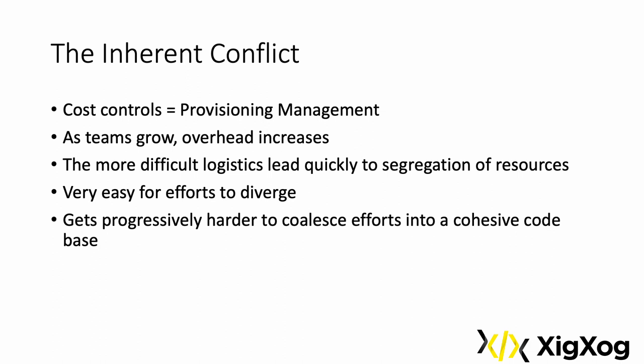Due to the difficulties and inefficiencies imposed, these factors can and often do lead to segregation and duplication of resources. When we segregate, it becomes very easy for applications to diverge and increasingly difficult to maintain architectural integrity.